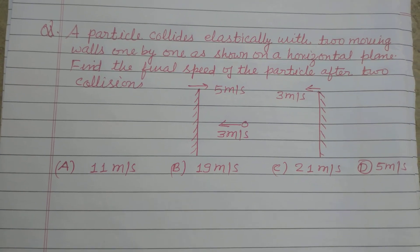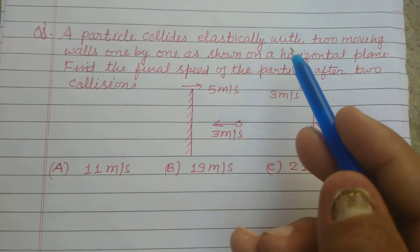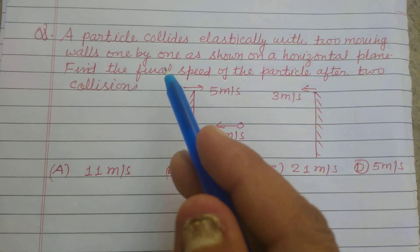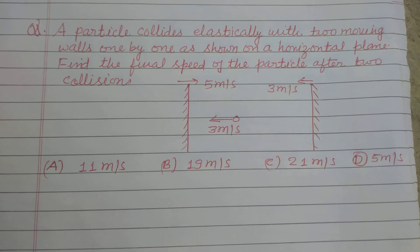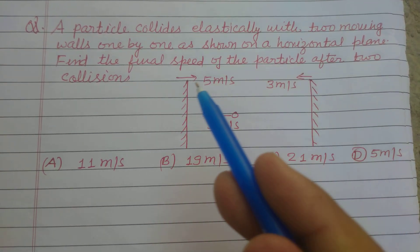Hello students and welcome to this YouTube channel. Here is the question. A particle collides elastically with two moving balls one by one as shown on a horizontal plane. Find the final speed of the particle after two collisions.